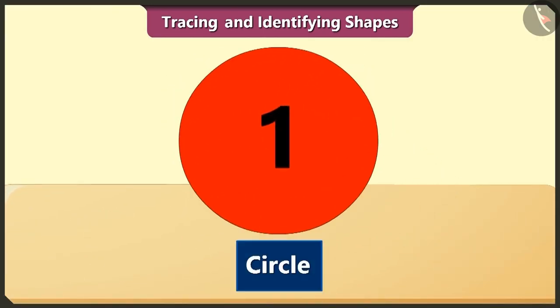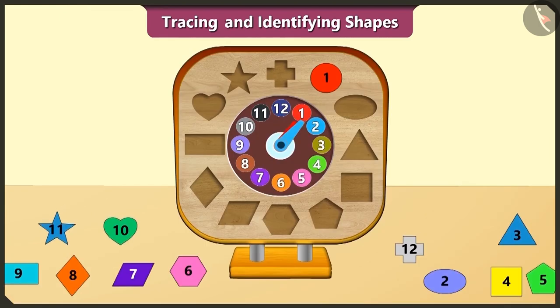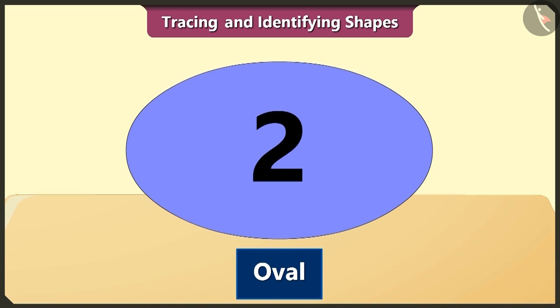Here, the circle is first in order. The oval is second in order. This shape is like an elongated circle. It is also called ellipse.